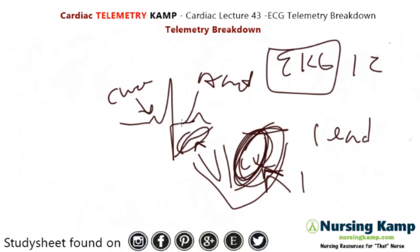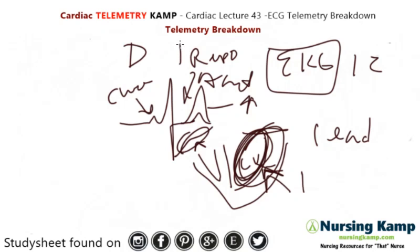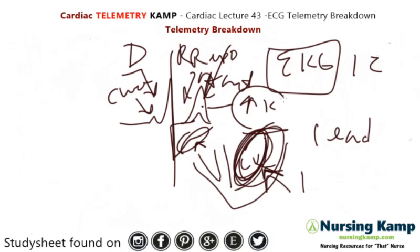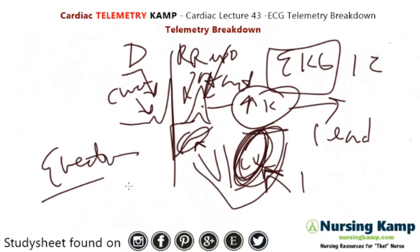Another thing we're going to look at is electrolytes and the repolarization section. Depolarization is on this side and repolarization on this side. Peaked T waves indicate elevations of potassium. We'll talk about that in the electrolytes lecture where I discuss electrolytes in the ECG.